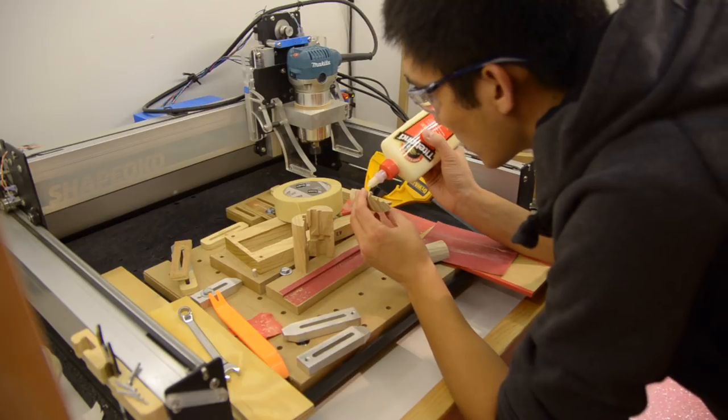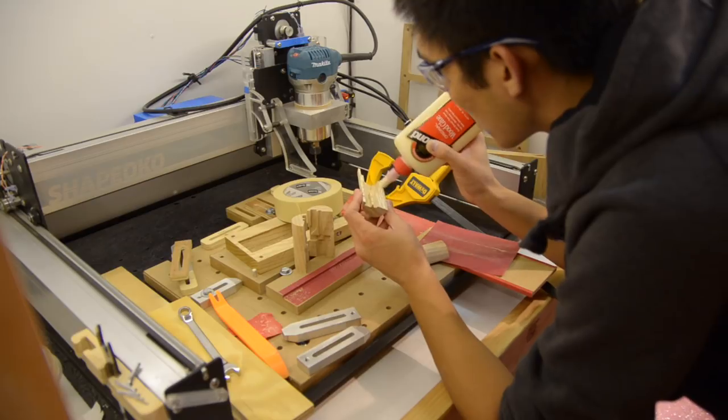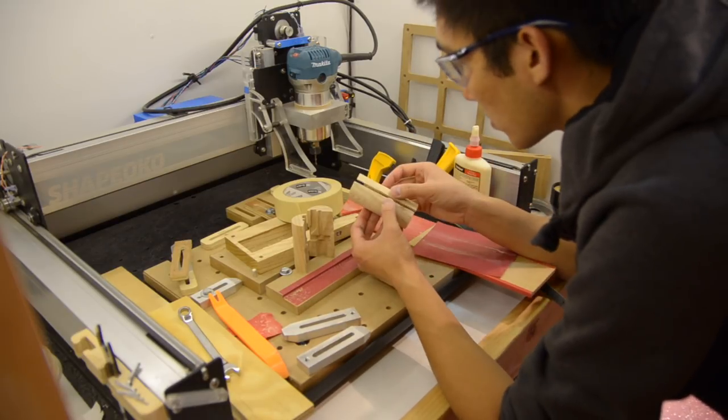Not only would two-sided machining afford me the flexibility to implement all of this, but it would also allow me to create a nearly seamless body with respect to the grain of the wood, assuming I did my machining correctly.